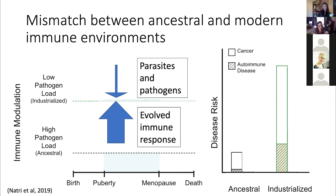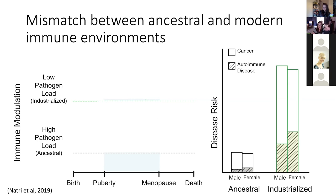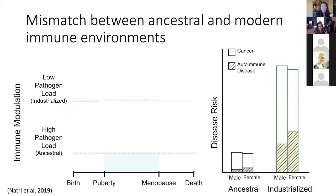But what this doesn't explain is why there's a tremendous sex difference. Approximately 80% of people with autoimmune disease are women — a huge female bias. We also observe that women experience lower rates of all non-reproductive cancers, other than thyroid cancer, than men do. So it seems like there may be a tradeoff in immune function: increased risk for autoimmune disease in women, potentially offsetting a lower risk in cancer.